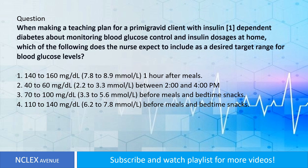Question: When making a teaching plan for a primigravid client with insulin-dependent diabetes about monitoring blood glucose control and insulin dosages at home, which of the following does the nurse expect to include as a desired target range for blood glucose levels? One: 140 to 160 mg/dL (7.8 to 8.9 mmol/L) one hour after meals. Two: 40 to 60 mg/dL (2.2 to 3.3 mmol/L) between 2 and 4 AM. Three: 70 to 100 mg/dL (3.3 to 5.6 mmol/L) before meals and bedtime snacks. Four: 110 to 140 mg/dL (6.2 to 7.8 mmol/L) before meals and bedtime snacks.